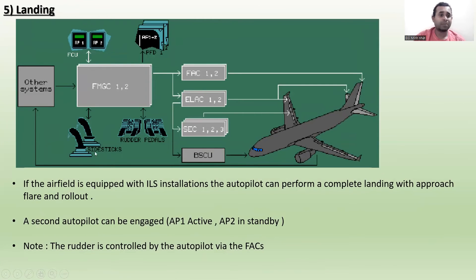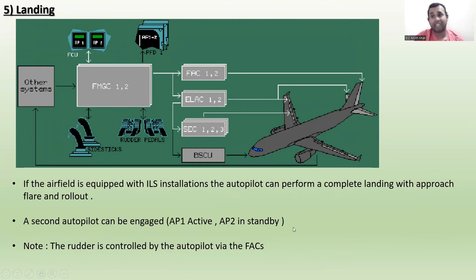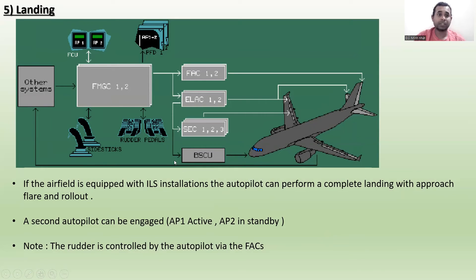For landing, if the airfield is equipped with an ILS Instrument Landing System installation, the autopilot can perform a complete landing with approach, flare, and rollout. A second autopilot can be engaged — AP1 active and AP2 in standby. Note that the rudder is controlled by the autopilot via the FACs. During landing, the BSCU is not in use.